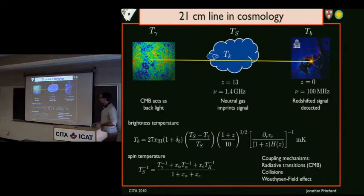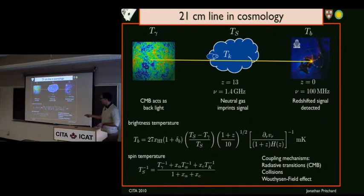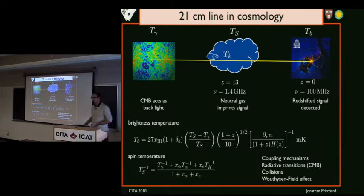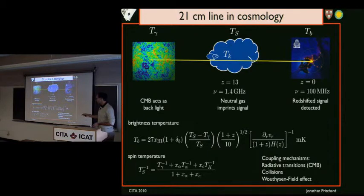RFI is a big challenge for these experiments. The amplitude of the signal is measured in units of brightness temperature, and tends to be in the range of tens of millikelvin. It depends on things like the neutral fraction of gas, the baryon density, and peculiar velocities. Importantly, it depends on the difference between the spin temperature and the CMB temperature. If this is positive you get an emission signal; if negative, an absorption signal. Importantly, if the spin temperature becomes much larger than the CMB temperature, this factor goes to one and all dependence on the spin temperature drops out.